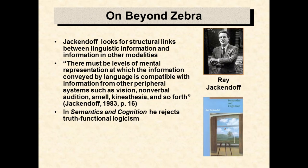For example, take Ray Jackendoff, a leading linguist. He is steeped in the classical tradition — he was trained by Noam Chomsky. But Jackendoff's theories require situation. He proposes strong links between the structure of linguistic representations and the structure of representations from other modalities. Consider his cognitive constraint: there must be levels of mental representation at which the information conveyed by language is compatible with information from other peripheral systems, such as vision,